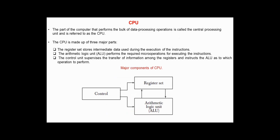CPU, Central Processing Unit, is the part of the computer that performs the bulk of data processing operations. The CPU is made up of three major parts. The register set stores the intermediate data used during the execution of instructions. The Arithmetic and Logic Unit, ALU, performs the required micro-operations for executing the instructions.